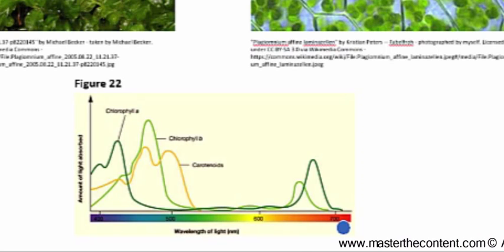Chlorophyll mainly absorbs light in the blue to near ultraviolet range, 350 to 400 nanometers, and also in the red light range, 650 to 700 nanometers. That means the light in the middle of the visible spectrum is reflected. Thus, plants appear green.